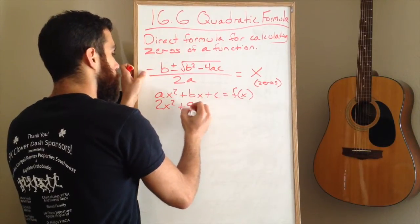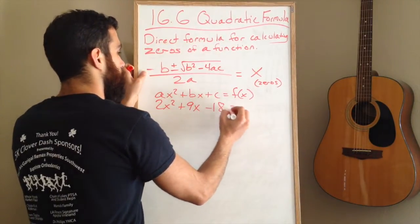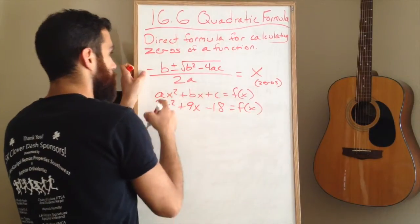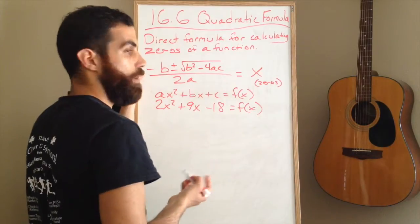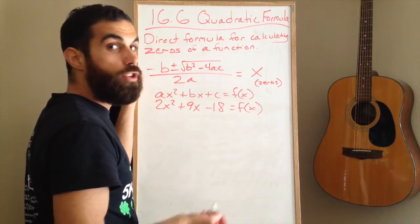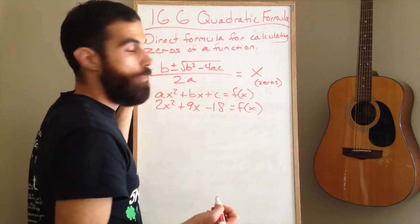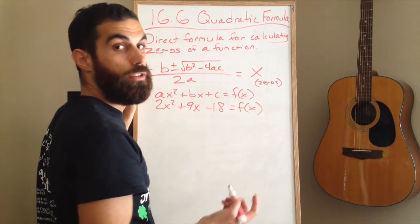2x squared plus 9x minus 18. a is 2, b is 9, c is negative 18, and you would plug them into the formula and simplify in order to solve it. So let's do that right now as our first example. Write that down if you haven't done so already.